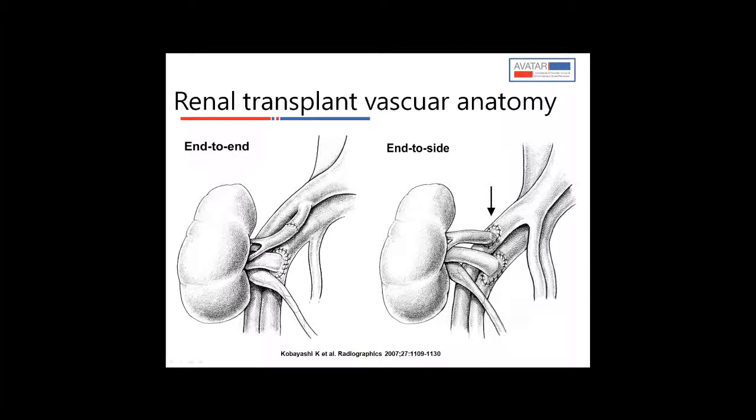The other type is end-to-side anastomosis, which is done when the internal iliac is affected by severe atherosclerosis, or in the case of cadaveric renal transplant where the donor renal artery is harvested along with a patch of aorta called Carrel's patch. In these situations we do an end-to-side anastomosis with the external iliac artery, as we can't do end-to-end with the external iliac because it supplies the lower limb.